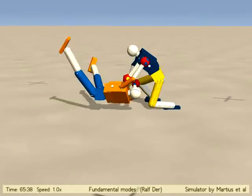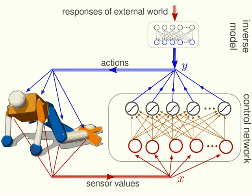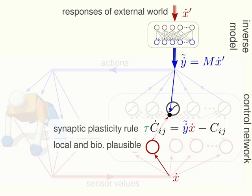Let us now look into the details. The sensor values of the robot are processed by a simple neural network, which generates the motor commands sent to the robot. With the help of an inverse model linking the responses of the external world back to the actions, we obtain the learning signal for each synapse. The new plasticity rule is a variant of Hebbian learning, upgraded with a link to the external world. It is simple, local and biologically plausible. More details are found in the paper.